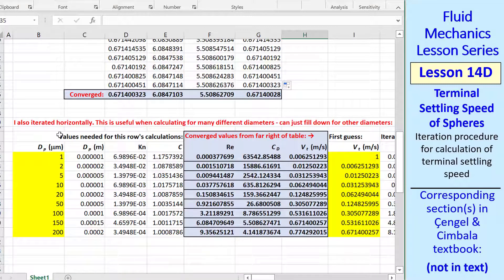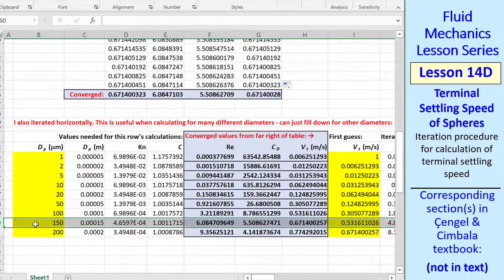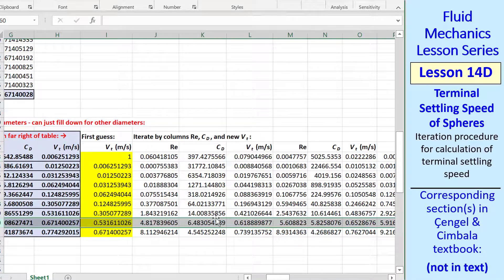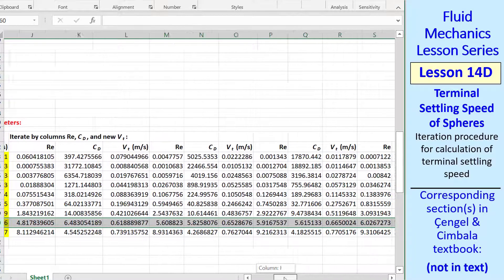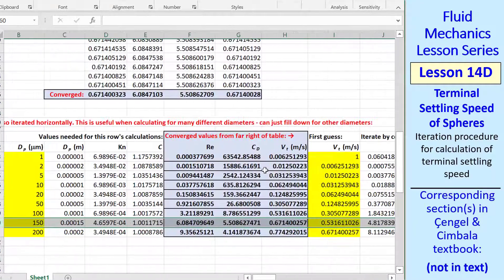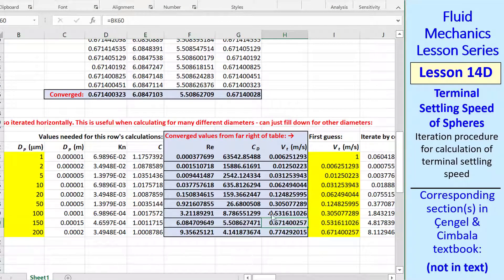Now I'll show you the horizontal calculations. Our example dp was 150 microns. I convert to meters, calculated Knudsen number, and Cunningham correction factor. These converged values refer to cells way on the right, but my actual iteration starts here. In this case, my first guess was the converged value from the previous diameter, since that should be fairly close as we increment dp. The first time, however, I entered some number. As we go across, I calculate Reynolds number, cd, and vt. Then I copy and pasted these three cells into the next three columns. And I continued that process several times. I finally stop at column bk. And if we scroll back, we see that my final value for vt refers to that cell.